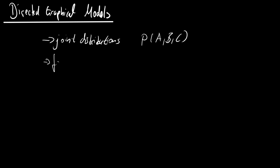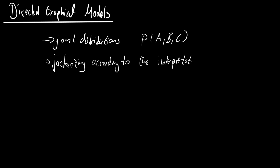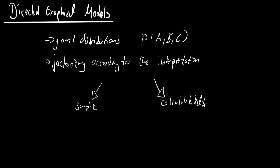So factorizing according to the interpretation helps us to sample and to calculate likelihood, because this is way easier if you have simple distributions instead of one big joint.